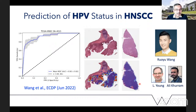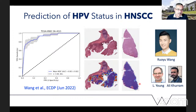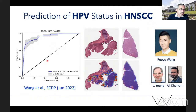Also with Ali Khurram, we worked on predicting HPV status in head and neck cancer. Ali noted he could often tell from H&E images which cases were HPV positive. In collaboration with Laurence Young from Warwick Medical School, led by senior PhD student Ryu Wong in the TIA Center, we showed that HPV status could be predicted with a good degree of accuracy from H&E images alone.